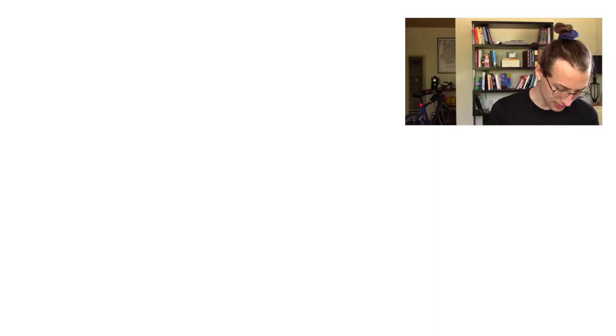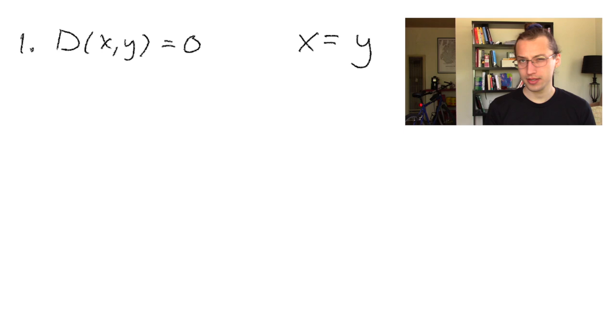Metrics have three requirements, and the first is simply that if the distance from x to y is 0, then x must equal y. This makes sense. It would be weird if in our metric space, the distance from one number to itself was non-zero. We just require that if two numbers are the same, the distance between them is 0.